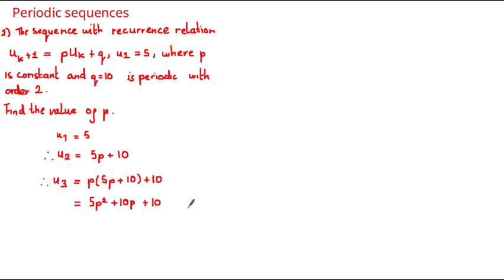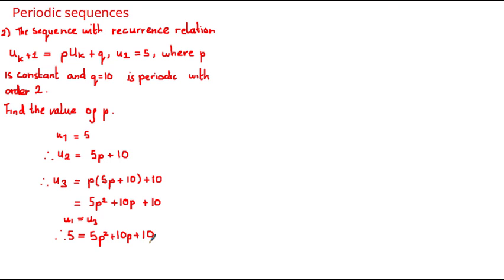So now we've written the first three terms of this periodic sequence. We've been given that the order is equal to 2, which means there are two values before the sequence repeats itself, and therefore the first term u sub 1 is equal to the third term u sub 3. We have u sub 1 and an expression for u sub 3, and therefore we can set these equal and solve this equation to find the value of p. Subtracting 5 from both sides we get 5p squared plus 10p plus 5 is equal to 0, and solving this quadratic equation we get that p is equal to negative 1.